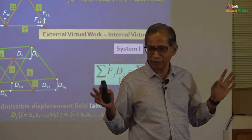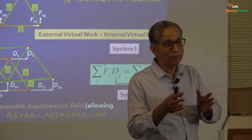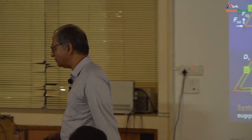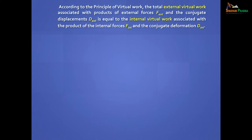We will demonstrate this with a few cases. According to the principle of virtual work, the total external virtual work associated with the products of external forces F-external and conjugate displacements D-external — F1 with D1, F2 with D2, that conjugal relationship — equals the internal virtual work associated with the product of internal forces F-internal with the conjugate displacement D-internal. For a truss we write internal displacement as E, but for a frame structure you have curvature and other generalized deformations.